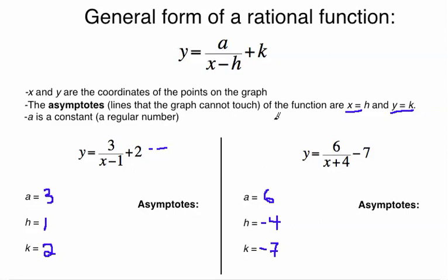Once you've identified your variables, finding the asymptotes is very easy. So here the asymptotes would be x equals h, so x equals 1, and y equals k, so y equals 2. Same thing here, right? So x equals h, so x equals negative 4, and then same thing, y equals k, so y equals negative 7, and that's it.